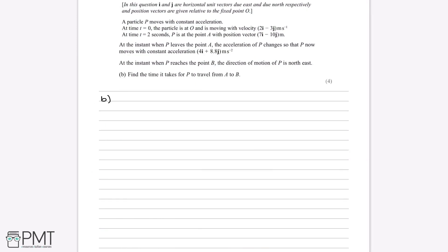From the instant P leaves point A, the acceleration changes so that P now moves with constant acceleration 4i plus 8.8j metres per second squared. When P reaches point B, the direction of motion is north-east. Part B asks us to find the time for P to travel from A to B. Unfortunately we can't just construct a single SUVAT equation as in Part A — we don't have enough information directly.